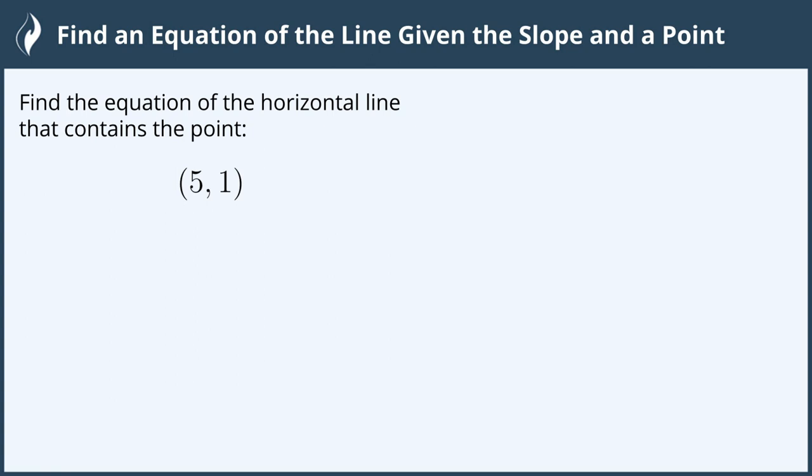Find the equation of the horizontal line that contains the point (5, 1). Now we weren't given the slope, so we're going to have to figure that out.